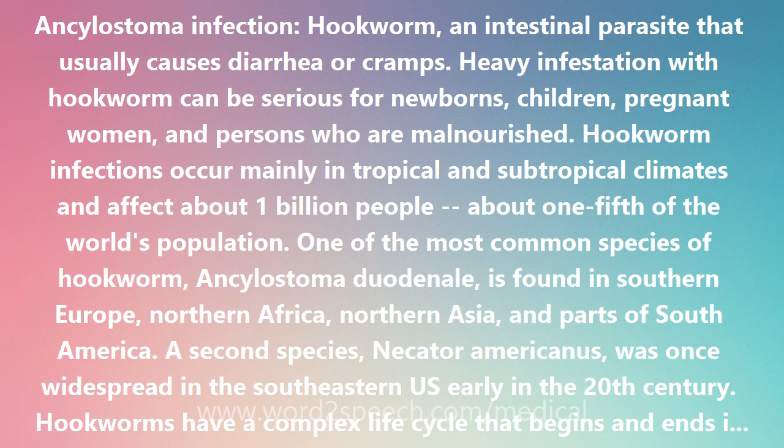Hookworms have a complex life cycle that begins and ends in the small intestine. Hookworm eggs require warm, moist, shaded soil to hatch into larvae. These barely visible larvae penetrate the skin, often through bare feet, are carried to the lungs, go through the respiratory tract to the mouth, are swallowed, and eventually reach the small intestine. This journey takes about a week.